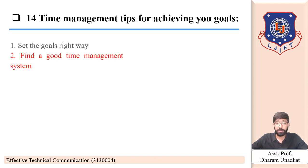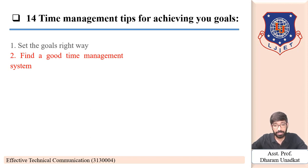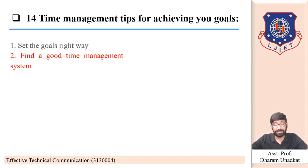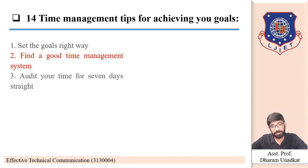The second tip is to find a good time management system. The quadrant time management system is probably the most effective. As we covered, the time management matrix splits your activities into four quadrants based on urgency and importance: things are either urgent, important, both, or neither. Quadrant four — not urgent and not important — contains activities to stay away from, while quadrant two — not urgent but important — is where you want to focus.